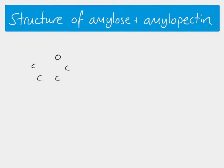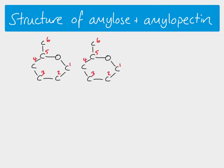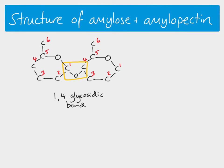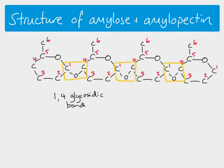Looking in more detail: here is an alpha glucose molecule - just the basic chain with carbons numbered. If we then have a second alpha glucose molecule, we can bond them together with a glycosidic bond - this is our 1,4 glycosidic bond. So we've made our disaccharide: two glucose molecules joined together, representing maltose. If we keep adding glucose molecules with condensation reactions, we get a big long chain of alpha glucose molecules joined by 1,4 glycosidic bonds - that would be amylose.